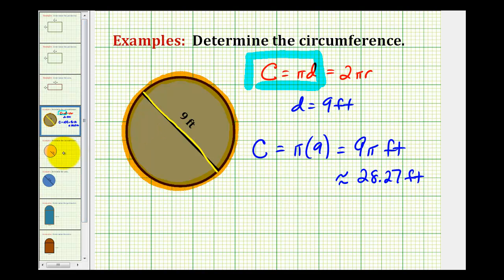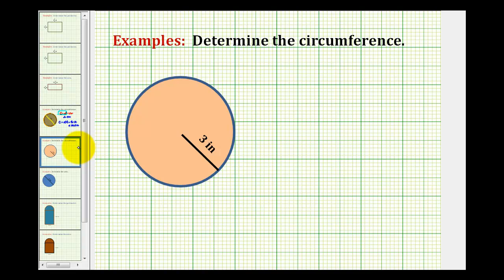So let's take a look at a second example. Notice on this problem, we're given the radius of the circle. So we'll use the circumference formula two times pi times R.